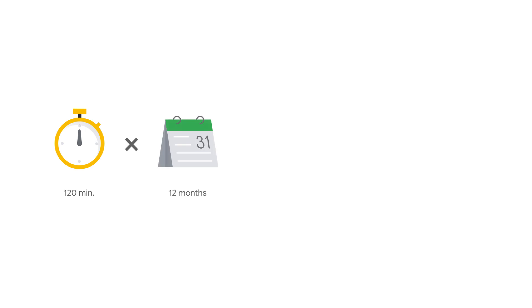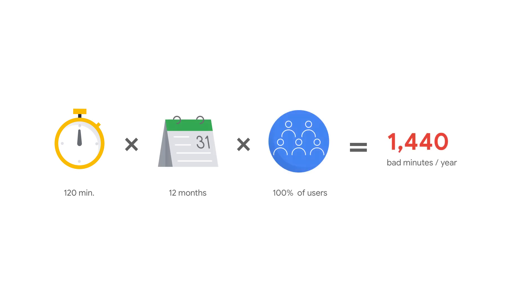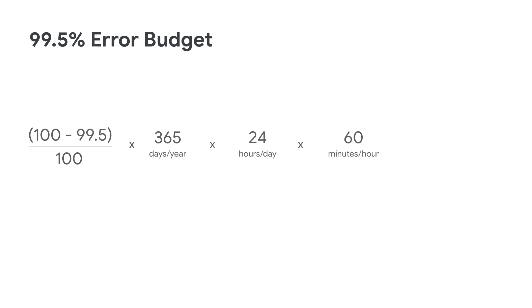That makes sense. So that means you'd have about 120 minutes times 12 months times 100% of your user base, which is about 1,440 bad minutes per year. And my error budget says that I'm supposed to achieve 2.5 nines, or 99.5% reliability, over the year, meaning that I can have about 2,600 bad minutes per year. Right, so that means your monthly database downtime is consuming half of your error budget.